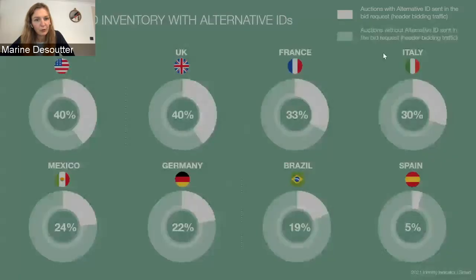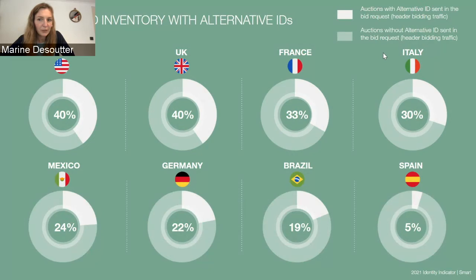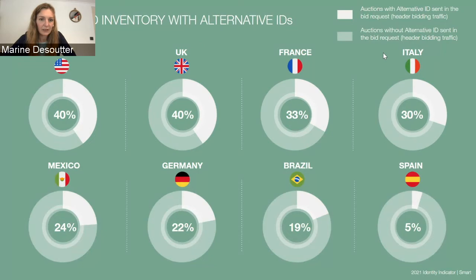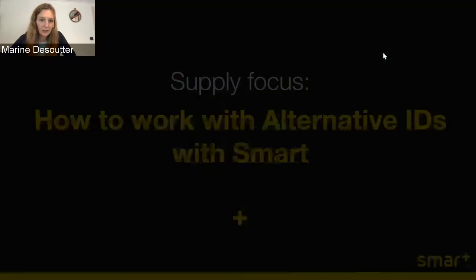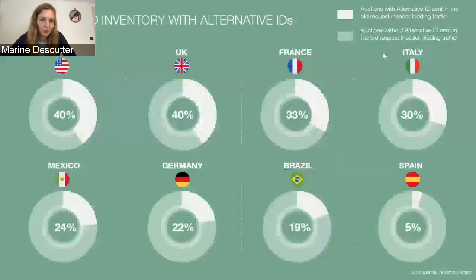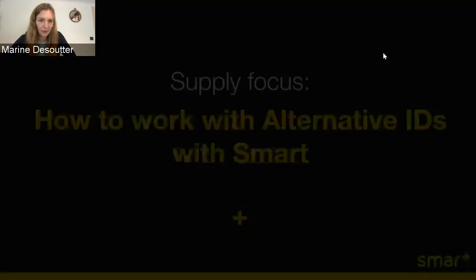Focusing particularly on alternative IDs, we can see that in many countries the coverage is already quite significant. This is a view on header bidding inventory collected at Smart, a mix of all the providers we currently support. We already have 40% of inventory in the USA and UK providing an alternative ID, which means there is already high momentum to start testing strategies around alternative IDs. The coverage is very different from one market to another — for example, in Spain we only have 5% alternative ID coverage, meaning that market is less mature in this field.